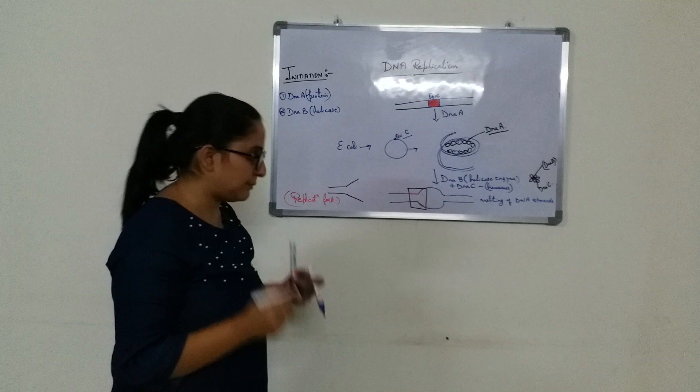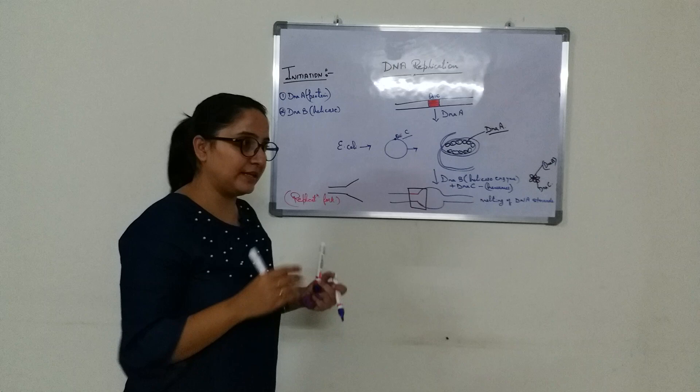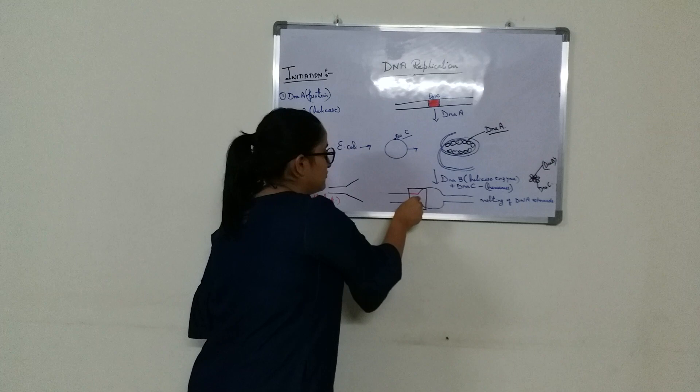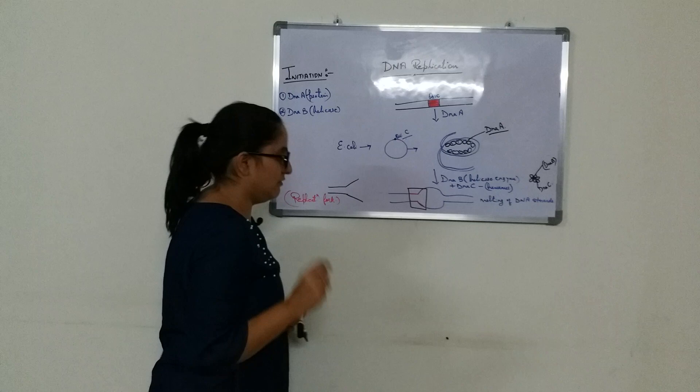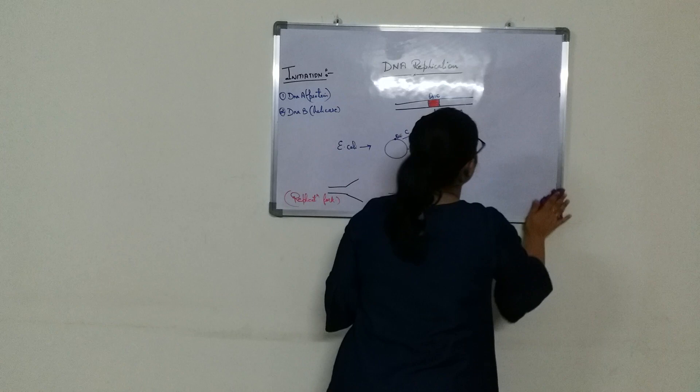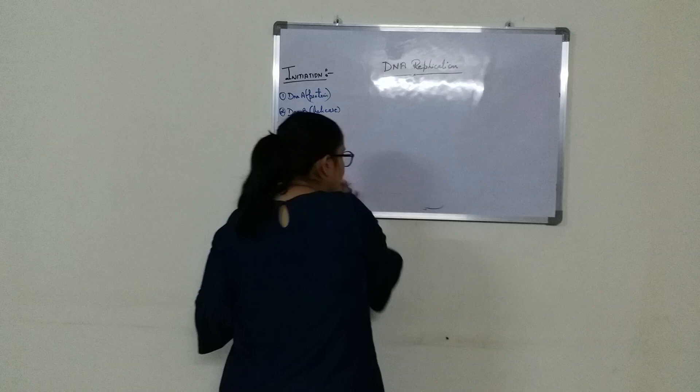When the DNA strands are melted and separated, the structure looks like a replication fork. In E. coli, since it is a circular DNA, there will be two replication forks produced in the process.